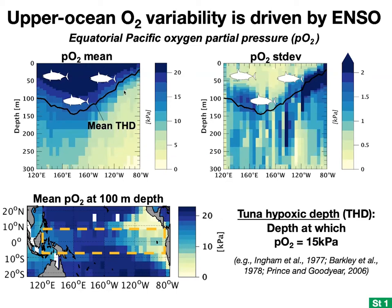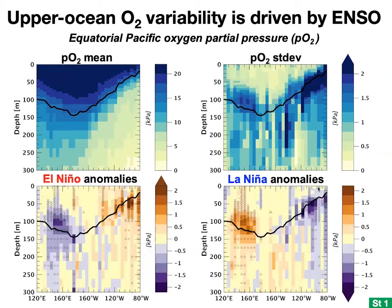From this cross section, annual mean PO2 decreases quickly with depth in the east but remains higher below the surface in the west. It's most variable at around 50 meters in the east and around 100 meters in the west. During El Niño, PO2 increases in the east and decreases in the west, with the opposite occurring during La Niña. Where ENSO-driven PO2 variations are greatest, so too are the overall PO2 variabilities, suggesting that variability is primarily driven by ENSO in this region.